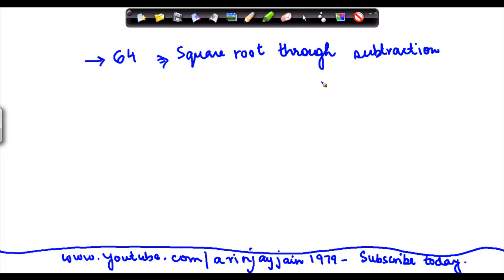In our earlier videos, we had seen that the sum of n odd numbers is equal to n squared, right?